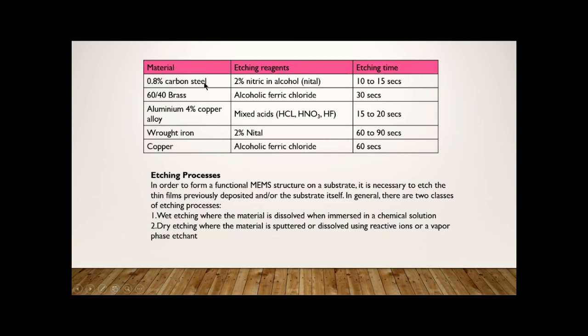Here I have given some few materials and their etchant and etching time. Depending upon the temperature as well as your metal composition, this etching time will vary, but the etchant should not vary. If you are using carbon steel, you should go with this only, not other etchants. If any alternate etchants are available, you should go for trial and error to fix the timing. After that only you will succeed. Otherwise it is very difficult to identify the timing and grain structure after the etching process.